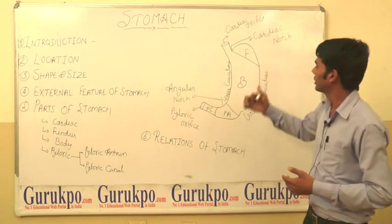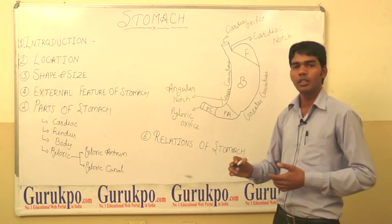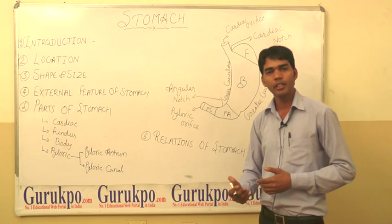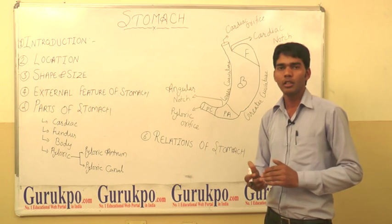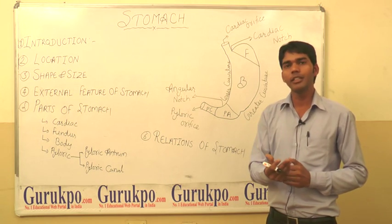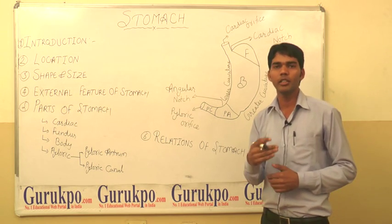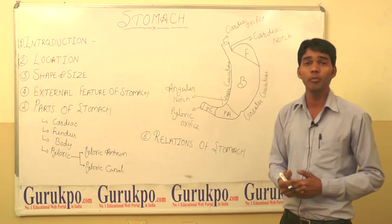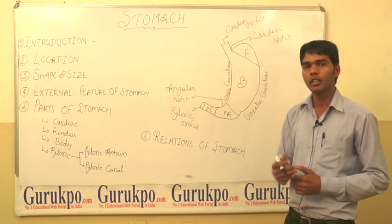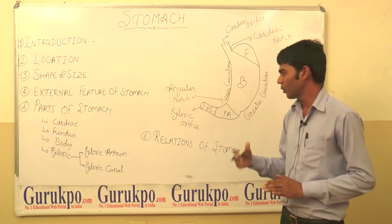Next we discuss the relations of the stomach. On the anterior side of the stomach, the stomach is related to the anterior abdominal wall, the diaphragm, and the left lobe of the liver.